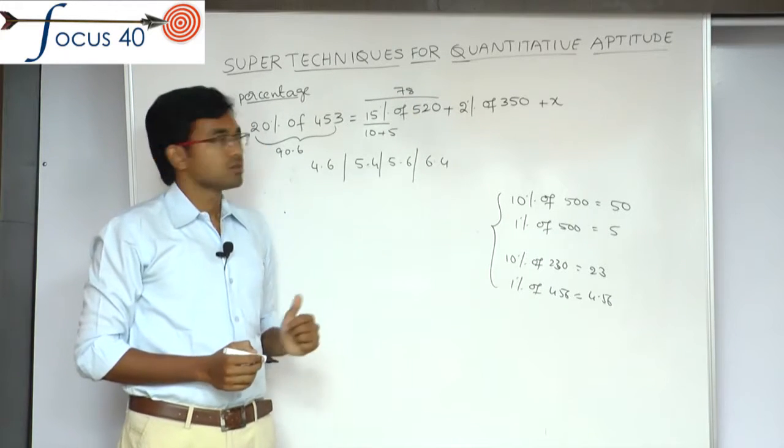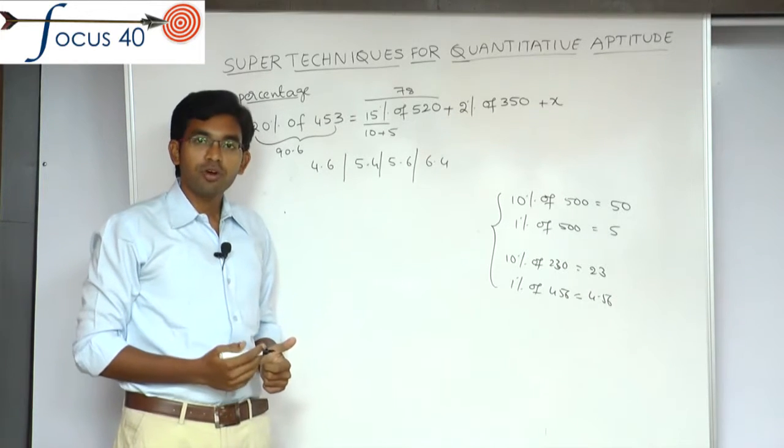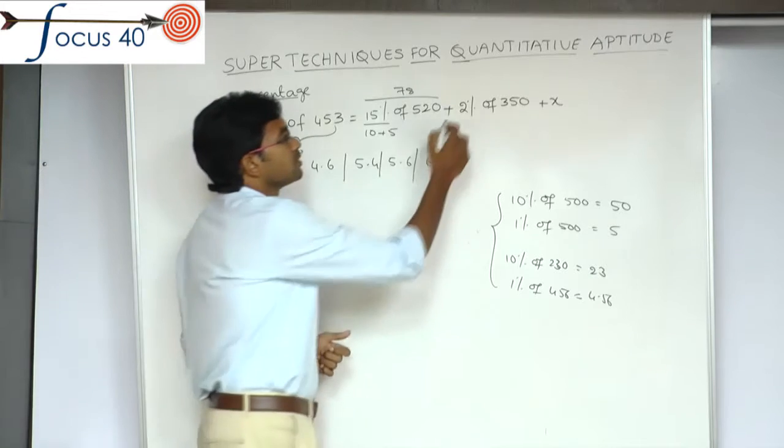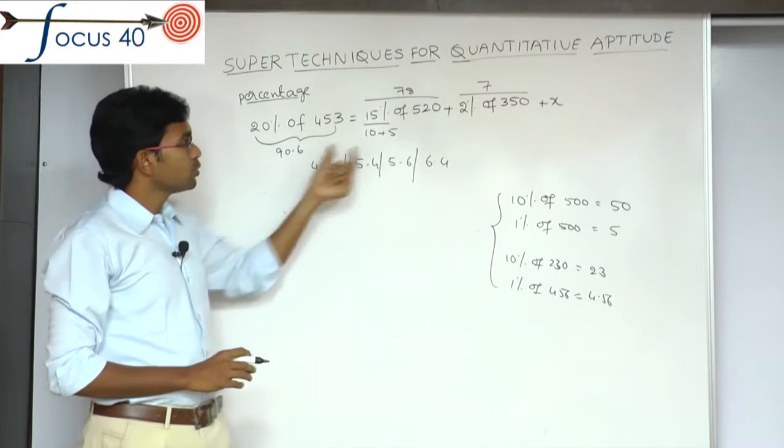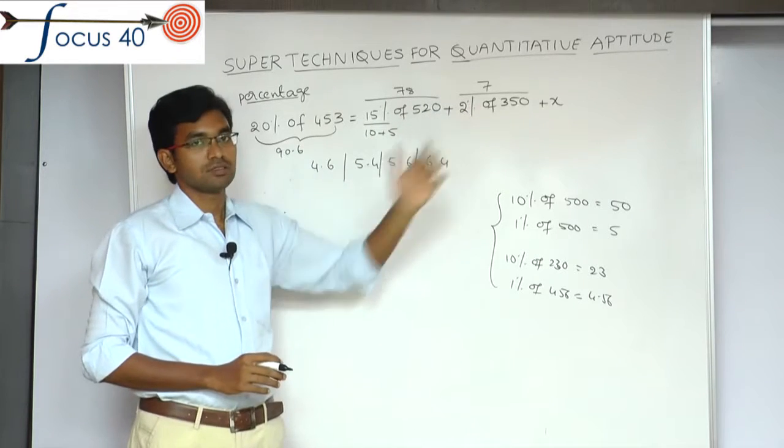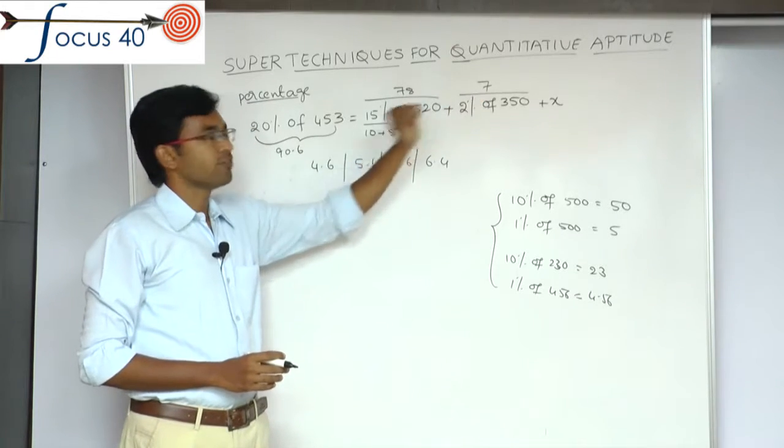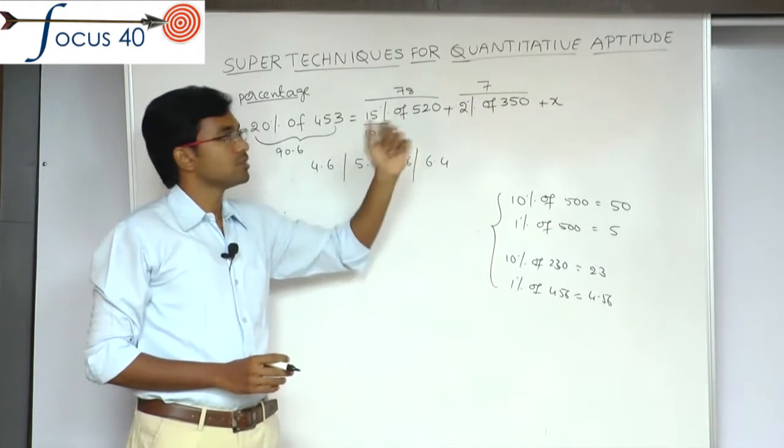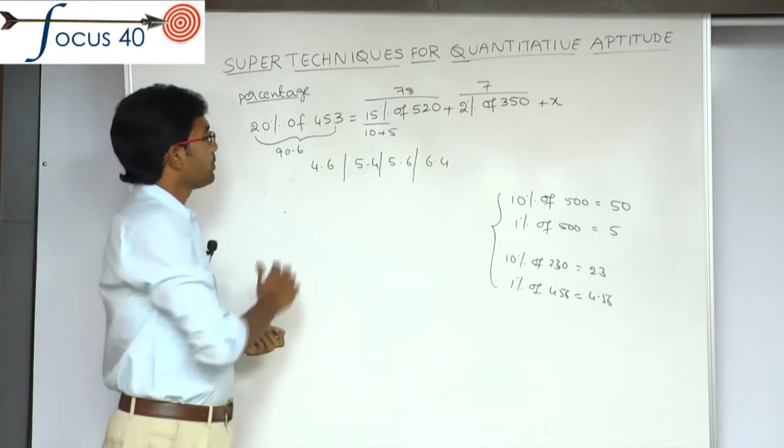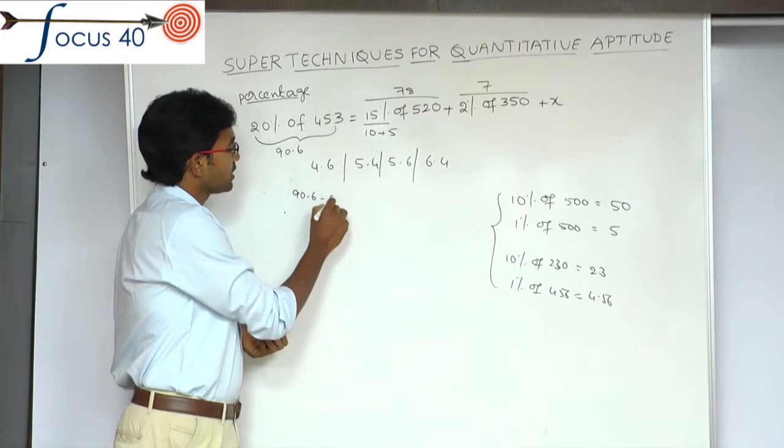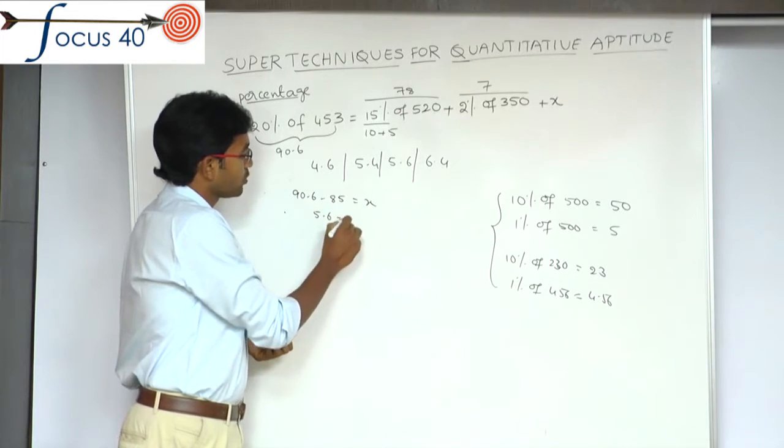2% of 350. What is 1% of 350? 3.5. Since 2% is double, 3.5 doubled is 7. So this is 7. Now, 90.6 equal to 78 plus 7 plus x. Compare left hand side and right hand side. 78 plus 7 is 85. 85 plus x. So, 90.6 minus 85 equal to x. 5.6 equal to x. This is the answer.